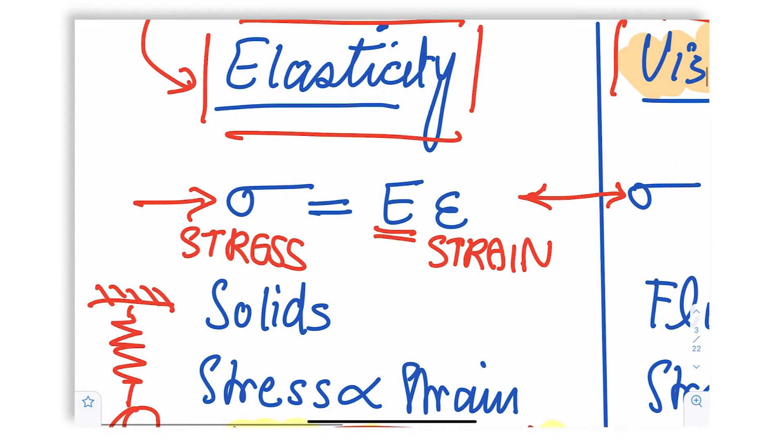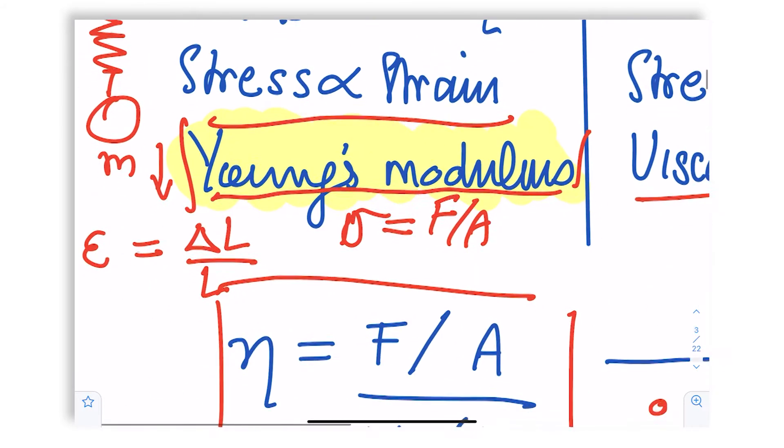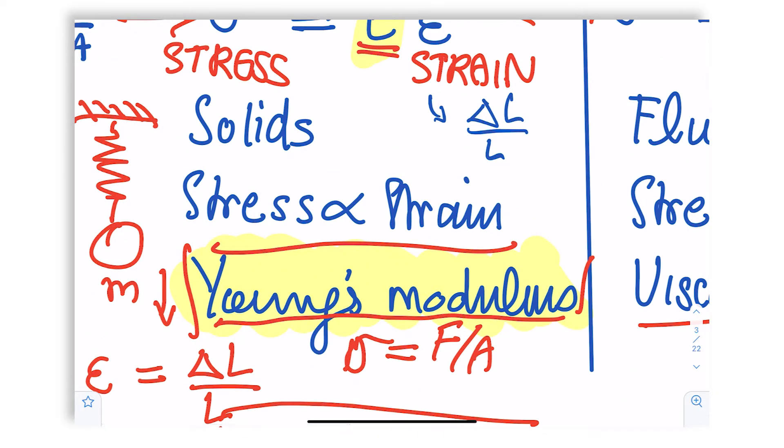If you look at solids, we know from high school physics that elasticity of a solid is measured by a proportionality constant. You're familiar with Young's modulus E, and it relates the stress with the strain. What is stress? Stress is nothing but the term F by A, and strain is the relative deformation. If you recall when you have a spring with a mass, then the strain is simply the change in length upon the length, and stress is force acting per unit area.